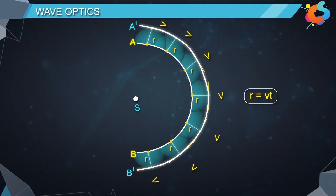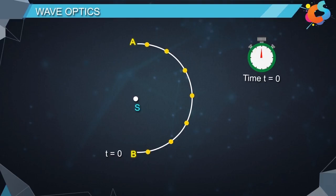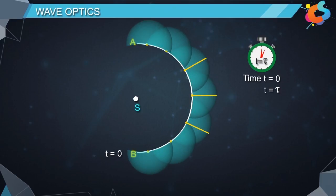When time t equals 0, the radius of secondary wavelets will be equal to 0, representing the initial position of the wave. When time t equals tau, the radius of the secondary wavelets will be equal to V times tau, and this will be the new position of the wave.